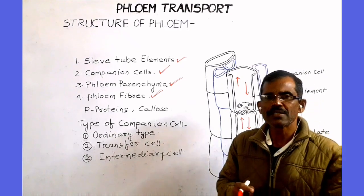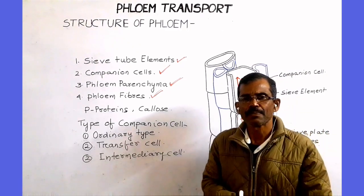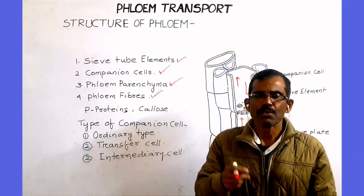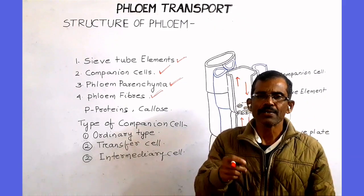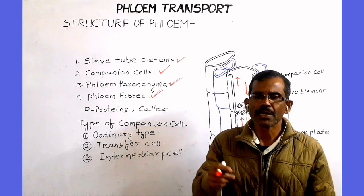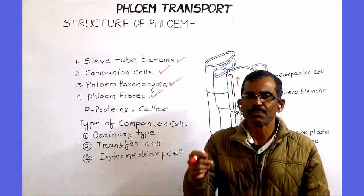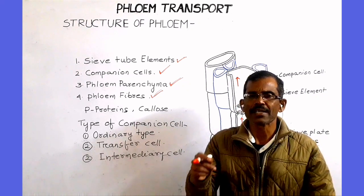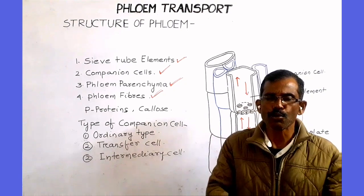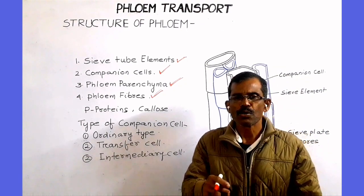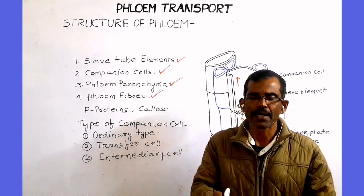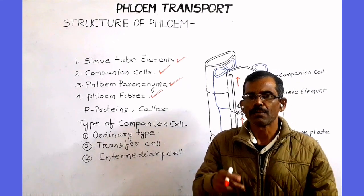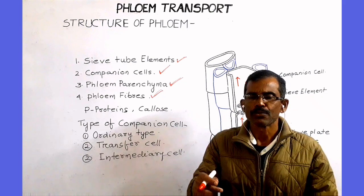Sieve tube elements are unique living cells. At maturity, they do not have a nucleus. Sieve tube elements are joined end-to-end to form a tubular structure known as a sieve tube. In a sieve tube, sieve elements are separated by a porous sieve plate. The pores present in the plate provide a continuous passage for the movement of sap through the phloem.